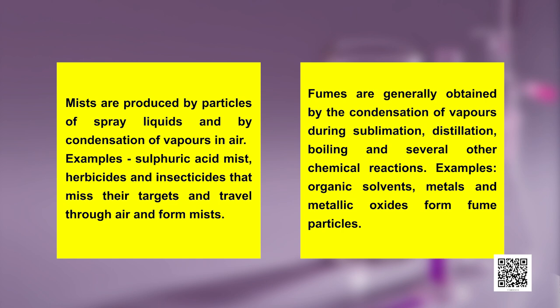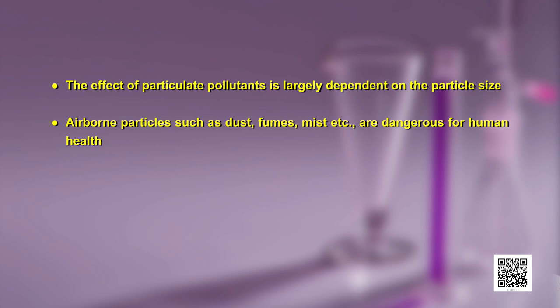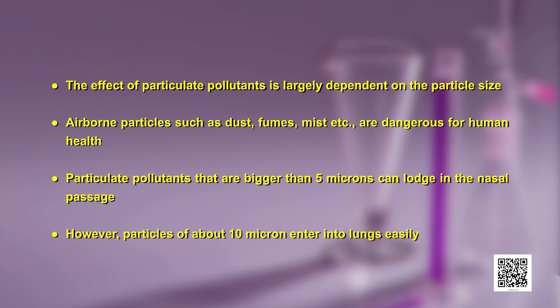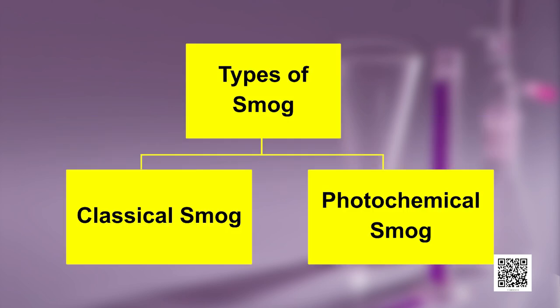The effect of particulate pollutants is largely dependent on particle size. Airborne particles such as dust, fumes and mist are dangerous for human health. Particulate pollutants bigger than 5 microns can lodge in the nasal passage, while particles of about 10 microns enter into the lungs easily. Smog is the most common example of air pollution occurring in many cities. The word 'smog' is derived from smoke and fog. Two types of smog are classical smog and photochemical smog. Classical smog occurs in cool, humid climate and is a mixture of smoke, fog and sulphur dioxide — chemically it is a reducing mixture, so it is called reducing smog.